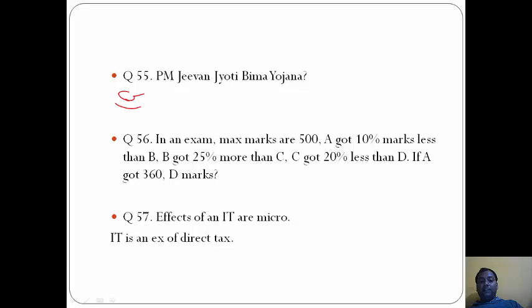Question 56: In an exam, maximum marks are 500. A got 10 percent marks less than B, B got 25 percent more than C, C got 30 percent less than D. The answer is D, that is A got 80 percent of D.